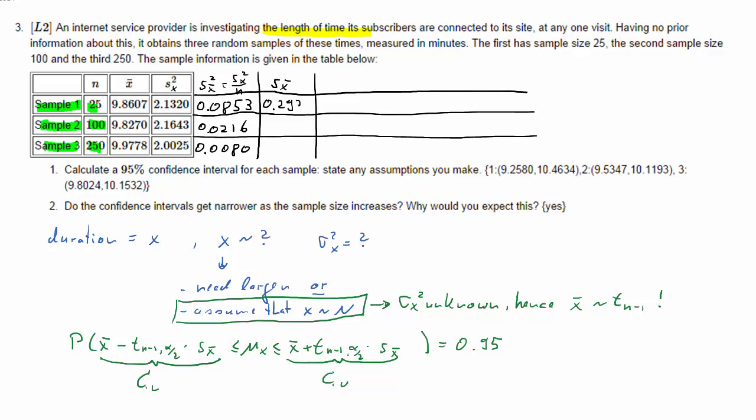So next what we really need in the confidence interval calculation is S X bar, so the standard deviation. That is just the square root of the previous column. So for instance, the square root of 0.008 is 0.0895.